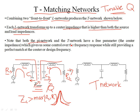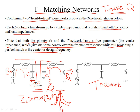Both pi and T networks have a free parameter — the center impedance Zcenter — which gives control over the frequency response while providing a perfect match at the design frequency. Maximum power transfer at the design frequency Fd remains the same, but you can vary Q or the frequency response by simply varying Zcenter.